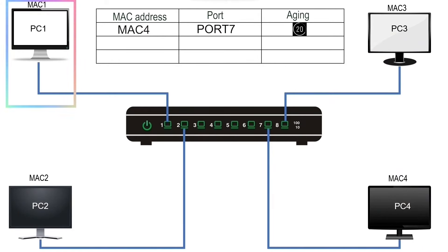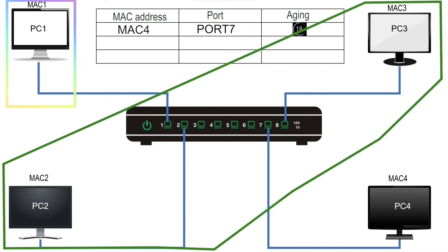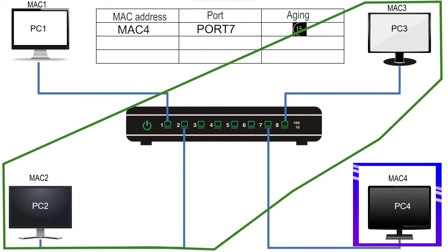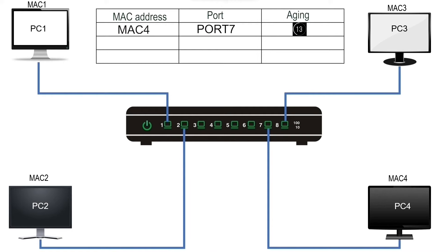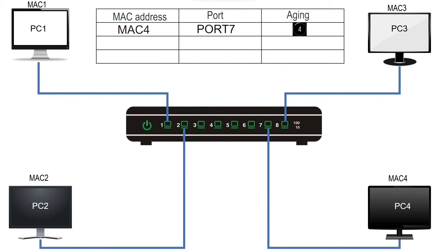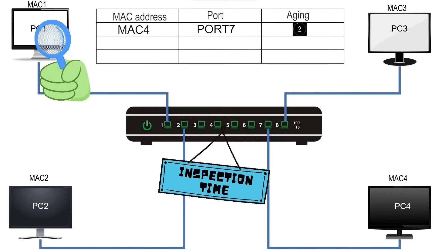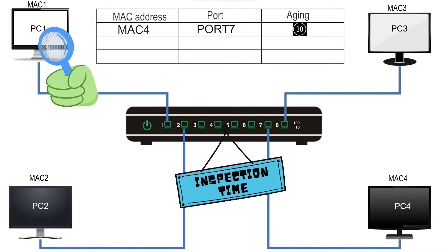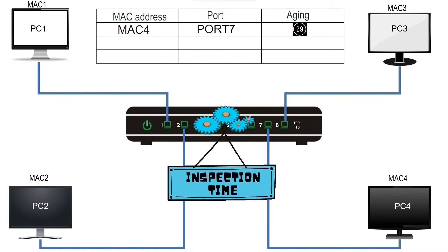Now suppose we want the broadcast from PC1 to reach only PC2 and PC3, not PC4. In this situation, we need to change the default VLAN ID of ports 1, 2, and 8. Let us suppose we change the default VLAN ID of these ports to 10. Now let us monitor a broadcast frame from PC1 to understand how the switch will process it after this change.